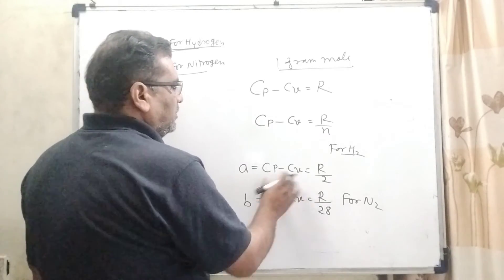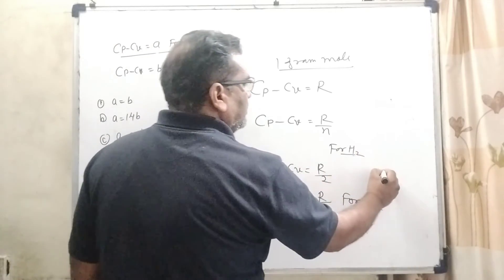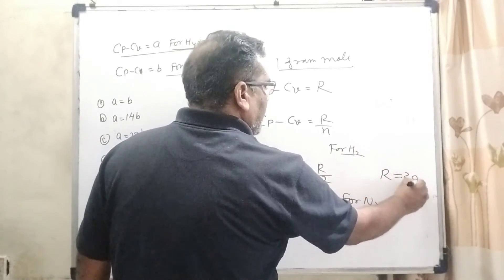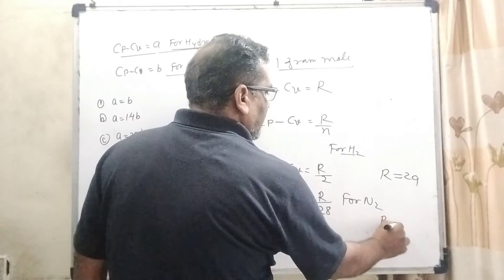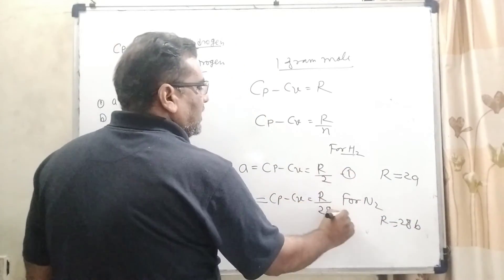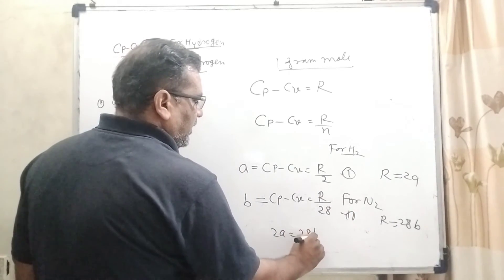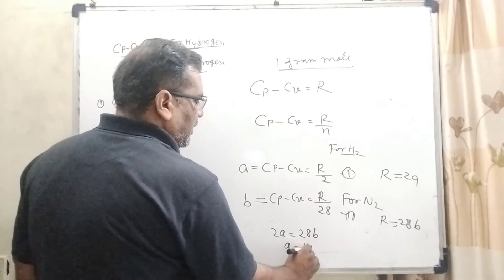So now, comparing here, R equal to - R can be written as 2A. Here, R can be written as 28B. So compare this first and second, 2A equal to 28B, then A equal to 14B.